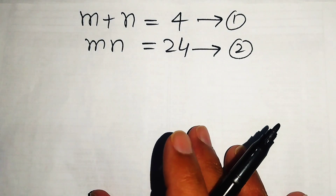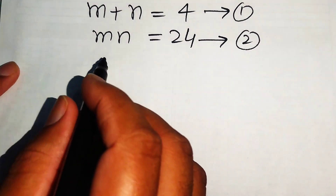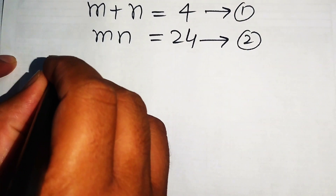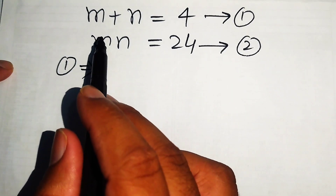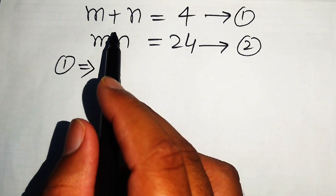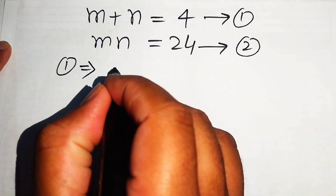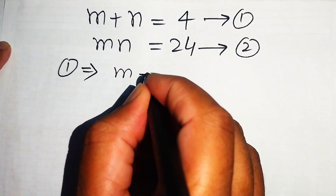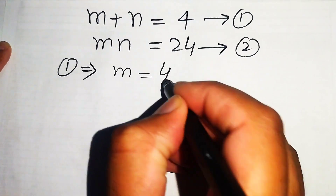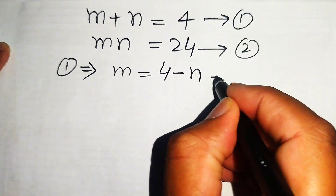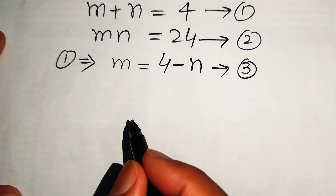We solve these two simultaneous equations. From equation number one, we find the value of m by moving n to the right-hand side, giving us m equals 4 minus n. We call this equation number three.